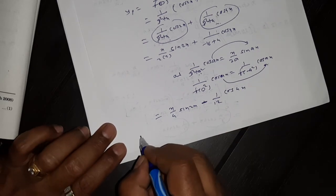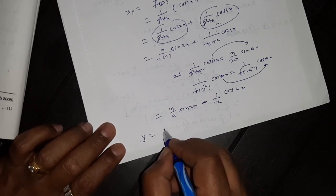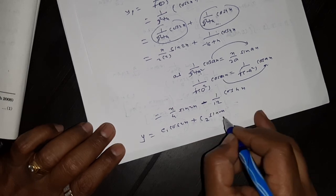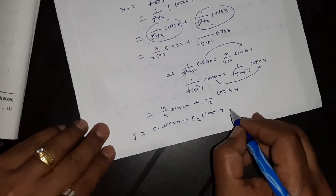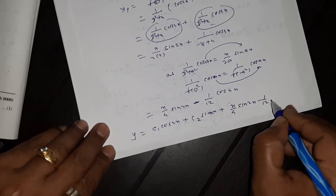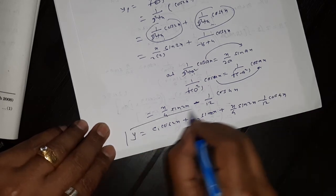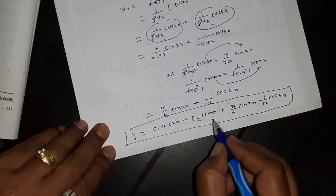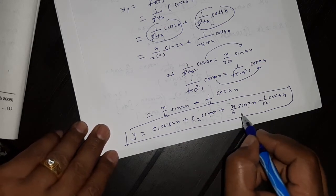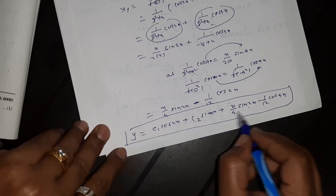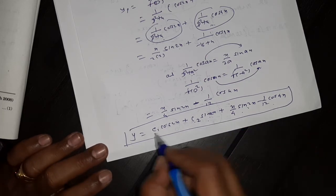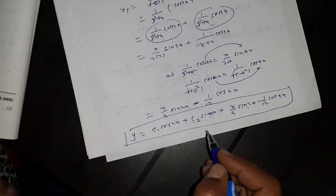So the general solution is y = c₁cos(2x) + c₂sin(2x) + x/4 · sin(2x) - 1/12 · cos(4x). Note that c₂sin(2x) and x/4 · sin(2x) are different terms — one is x·sin(2x) and the other is sin(2x) alone — so do not merge these two terms. This is the final answer.